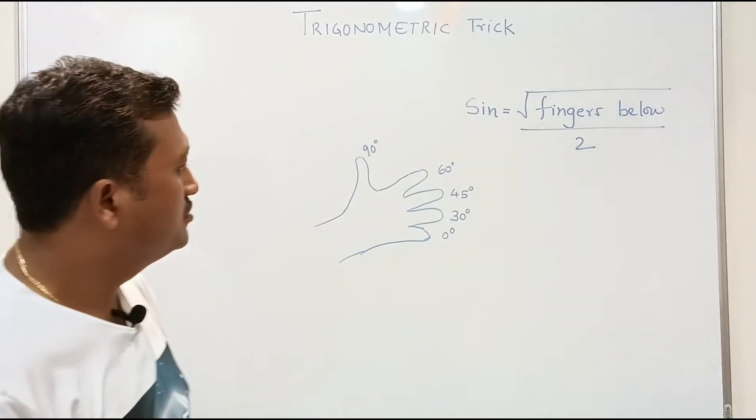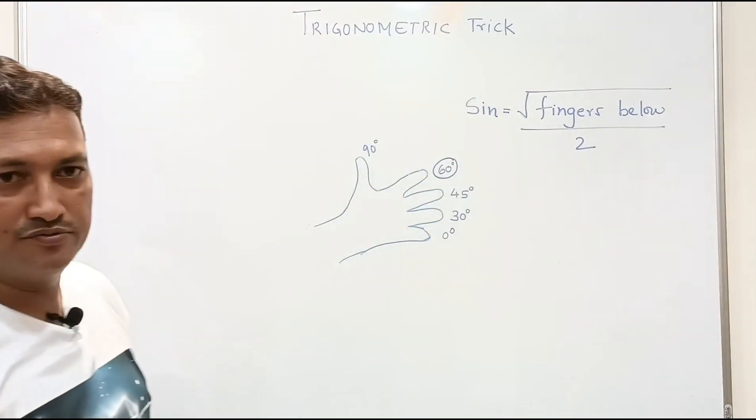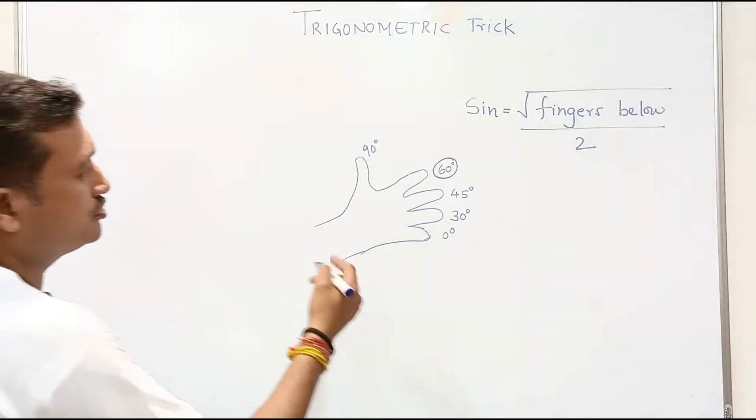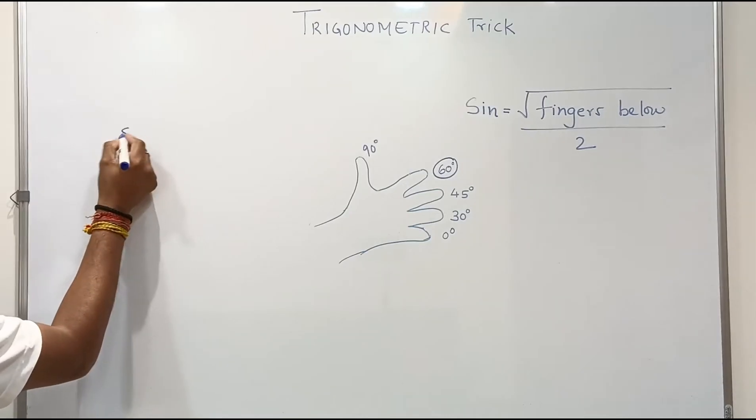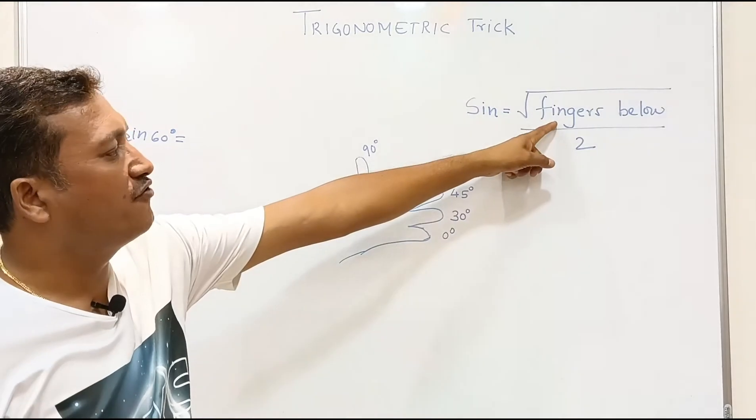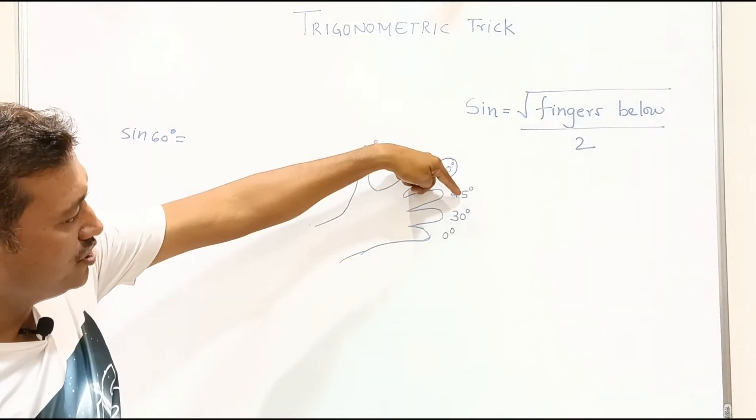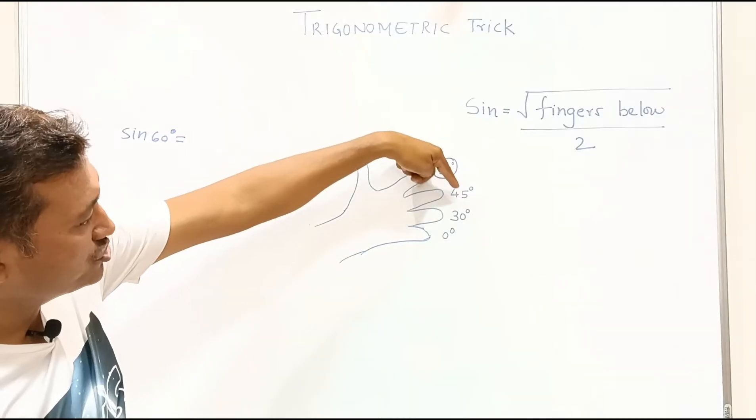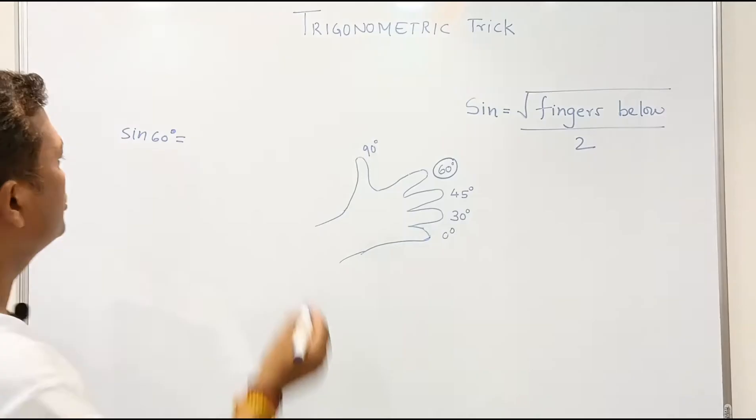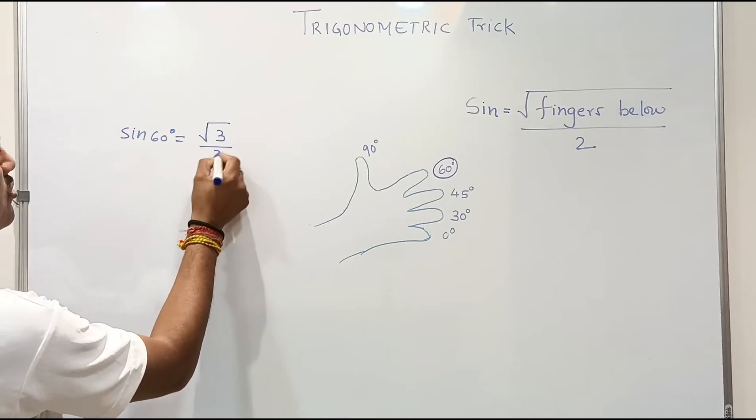For example, if I want to find sine of 60 degrees, the formula is sine of 60 degrees equals square root of fingers below 60 degrees. You can see there are three fingers below 60 degrees: 1, 2, 3. So here you will get square root of 3 over 2. So the value of sine of 60 is root 3 over 2.